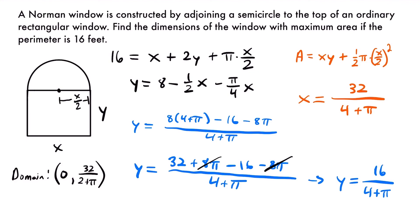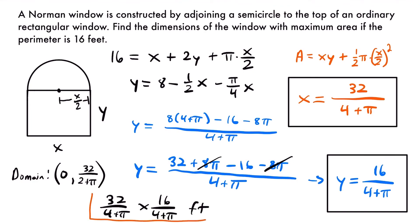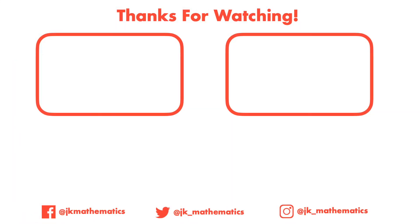We now have both dimensions for our Norman window. The dimensions are x = 32/(4+π) feet and y = 16/(4+π) feet. These are the dimensions that maximize the area of the Norman window given a perimeter of 16 feet. If you have any questions, feel free to leave them in the comments, and check out my channel for more calculus and optimization problem videos.